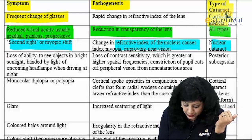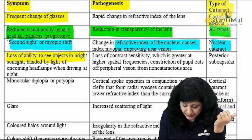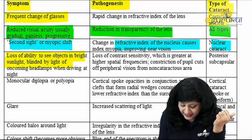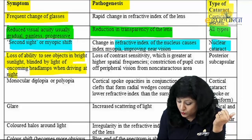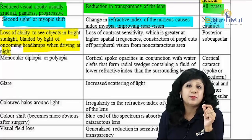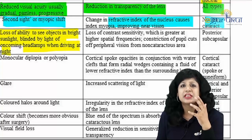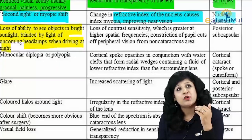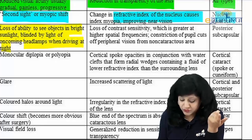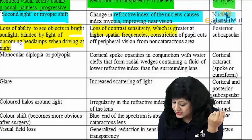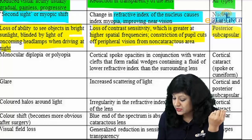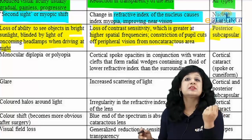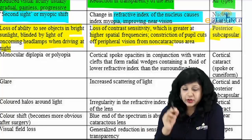Loss of ability to see objects in bright sunlight and being blinded by headlamps especially during night driving is due to loss of contrast sensitivity, especially at the highest spatial frequency. This is very typical of posterior subcapsular cataract.